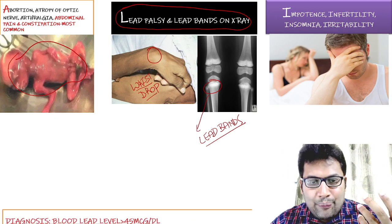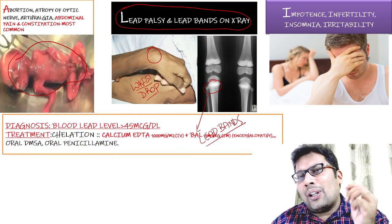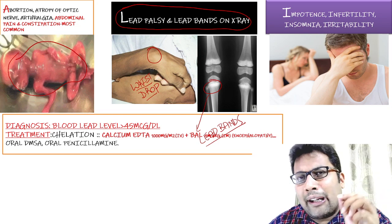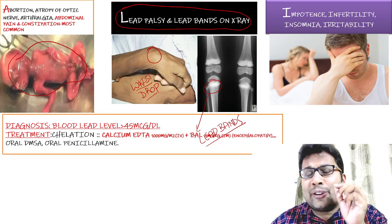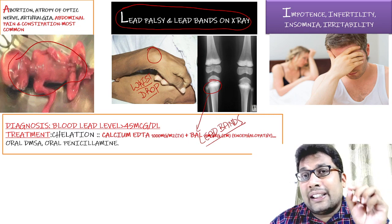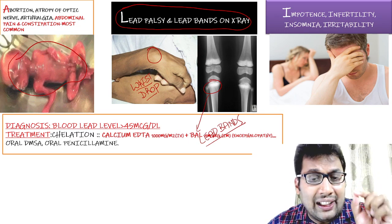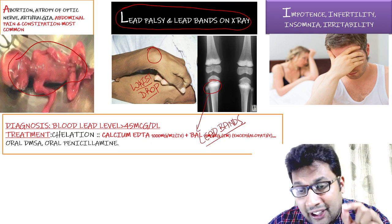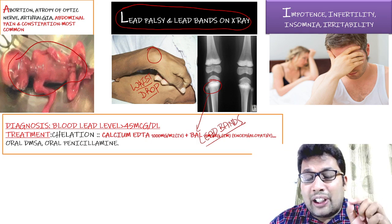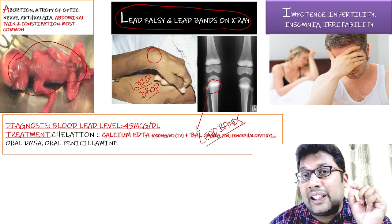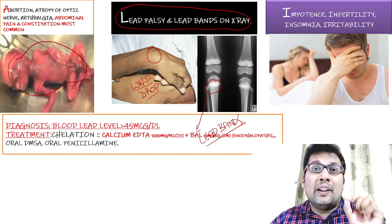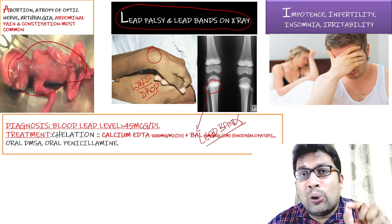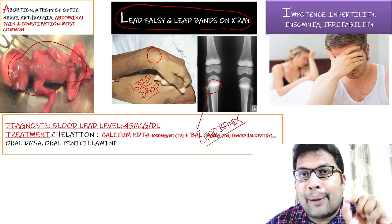For diagnosis and treatment: diagnosis is made by blood lead level greater than 45 micrograms per deciliter, after which chelation therapy is started. Calcium EDTA at 1000 milligrams per meter squared is given intravenously. BAL is given intramuscularly in cases of encephalopathy. For mild or asymptomatic patients, oral DMSA or oral penicillamine can be given.